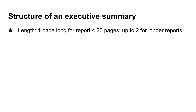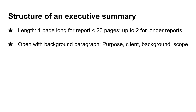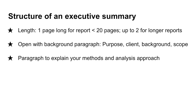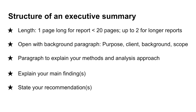Executive summaries follow a fairly standard structure, mimicking the organization of your report. If you have a report of 20 pages or fewer, your summary will be no more than one page long. For longer reports, your executive summary may be an additional page longer. You will include a background overview paragraph, a brief explanation of your approach or methods, your main findings, and finally, any recommendations or implications for readers from your work. It's common to use subheadings to help your audience easily follow your points.